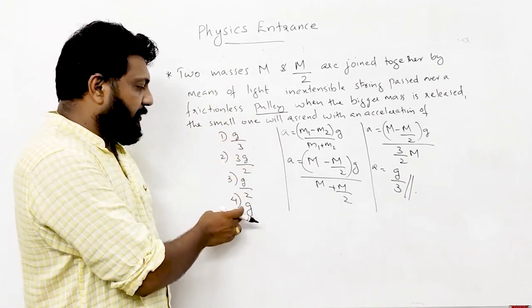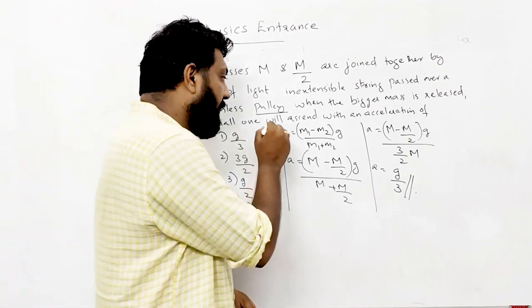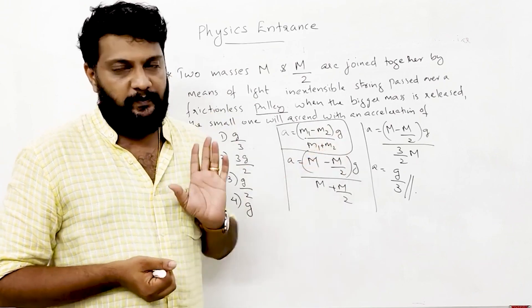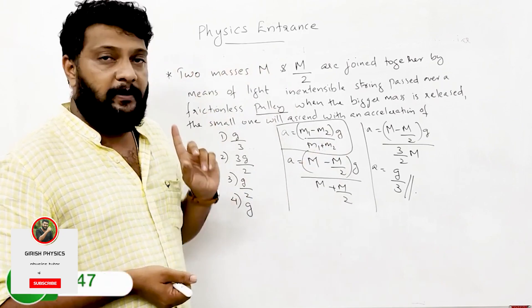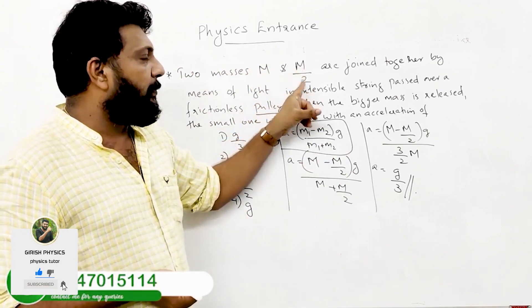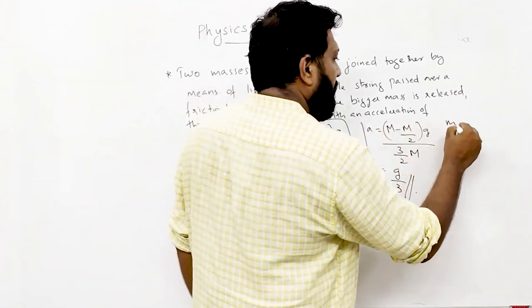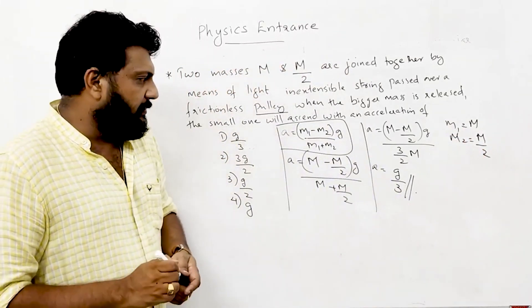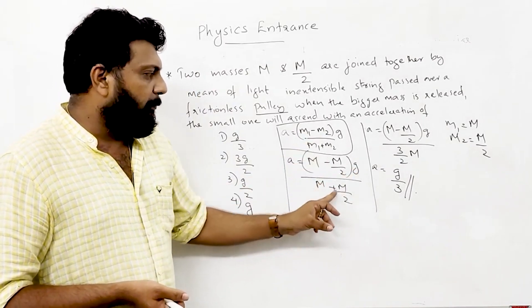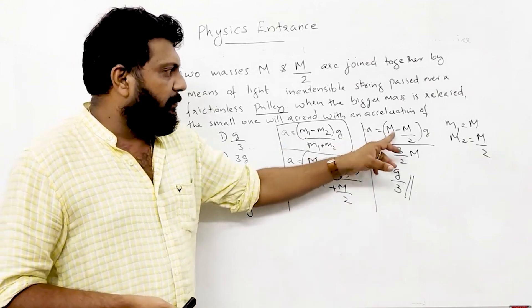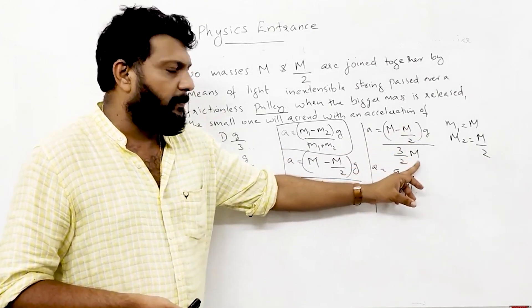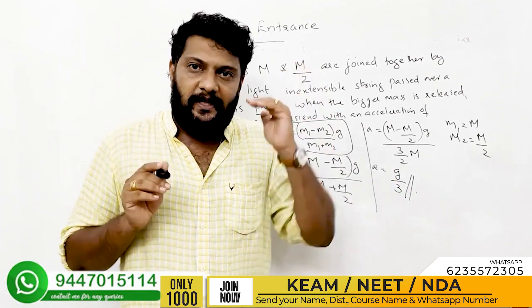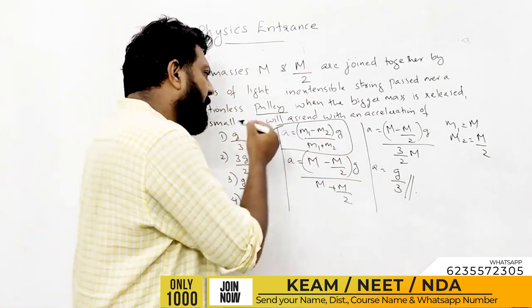Options are: G by 3, G by 2, G. Using the formula a = (M1 - M2) / (M1 + M2) × g. If M1 = M and M2 = M/2, then numerator is M - M/2 = M/2, and denominator is M + M/2.